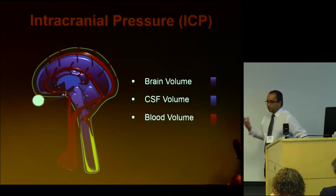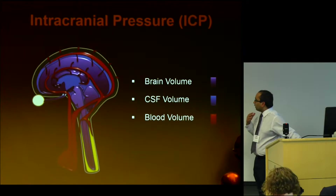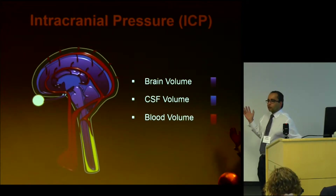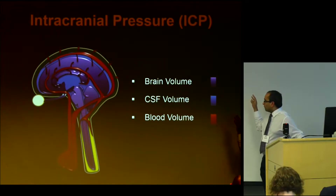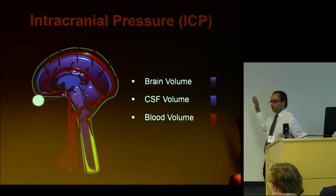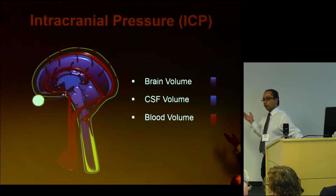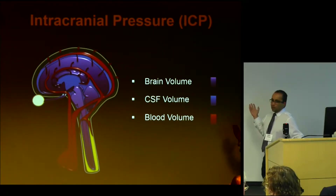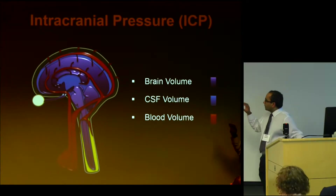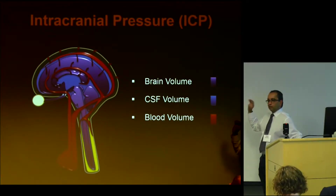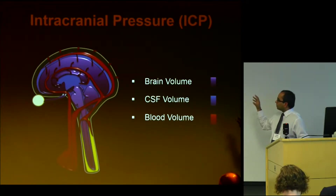From a very simplistic clinician standpoint, when we're looking at intracranial pressure, we've got a rigid cranial vault. We've got our brain volume, our CSF volume, and our blood volume. If one or more of these increases to a point that can't be compensated, the pressure will go up, and the pulsatility of the brain is driven by blood flowing into the intracranial compartment.